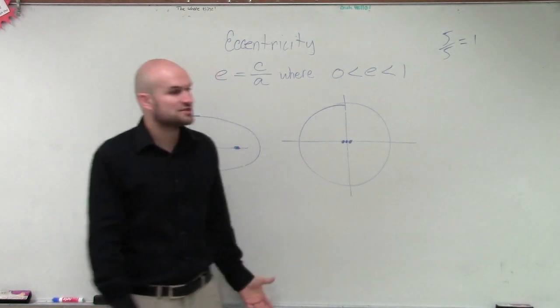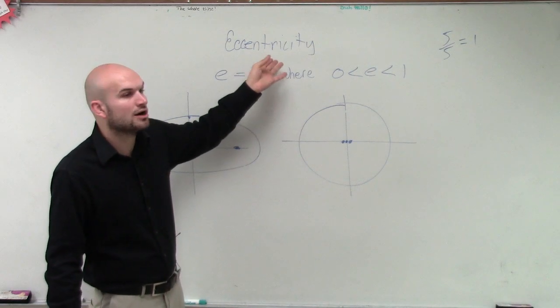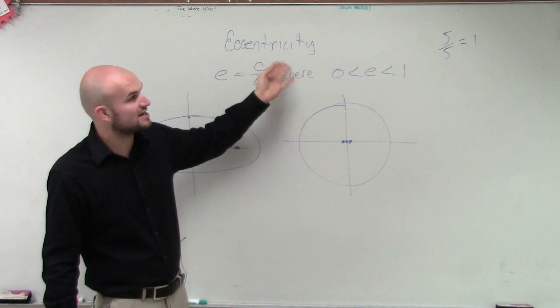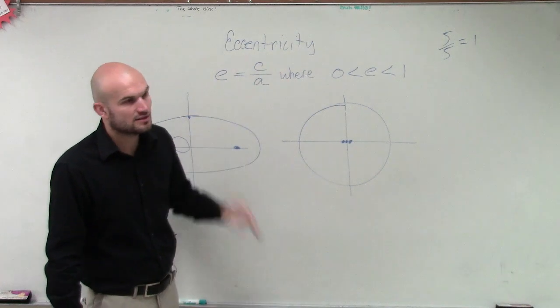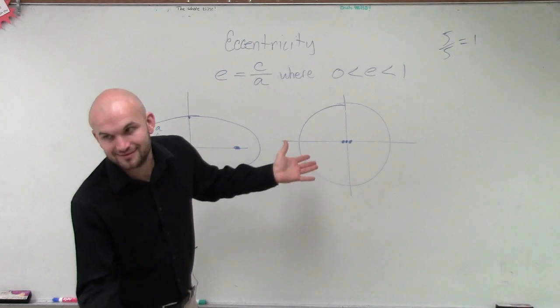So that is just a basic definition of eccentricity. All it is, ladies and gentlemen, is the ratio of the distance between your vertex and your foci and the vertices. So I'll just see you all right.